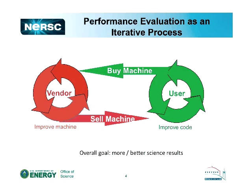NERSC acquires the systems we put on the floor for you to use via a competitive procurement involving benchmarking. We don't just decide in advance what we want — we take user workloads representing what you do, create benchmark problems, give those problems to the vendor, and the vendor gives us performance information about those codes, which we use in selecting those machines. Once we bring a machine in, like Hopper, it's up to you to improve and optimize your code for that architecture.